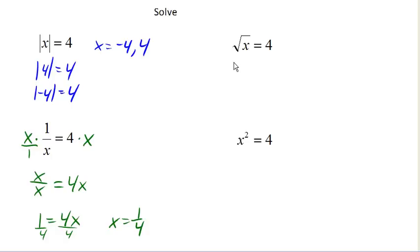Now, one of the things we can do here is say, how do I undo a square root? Well, if you think about things, if I take 3 and I square it, I get 9.